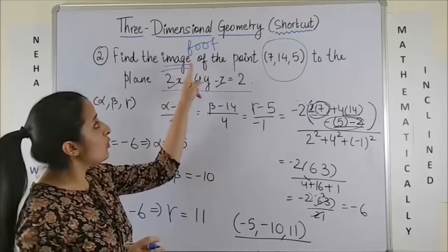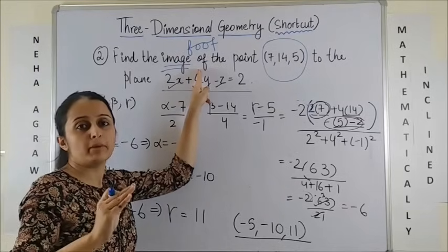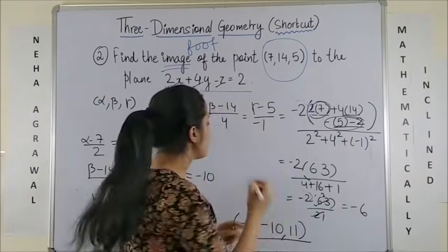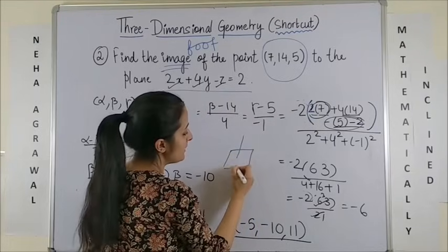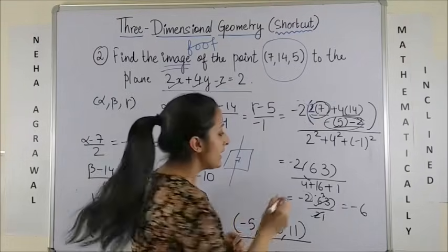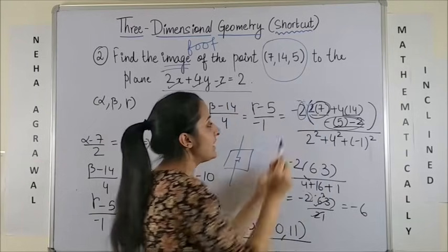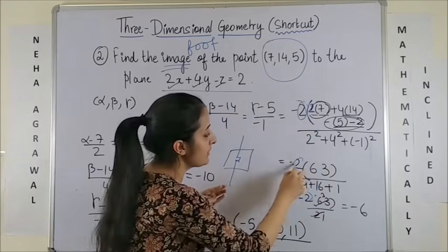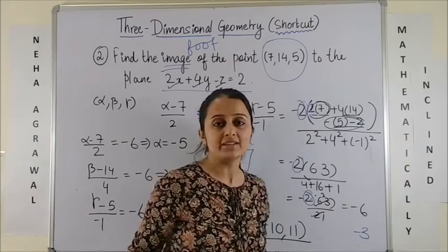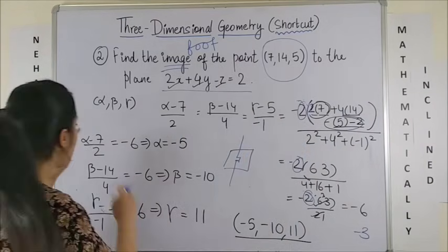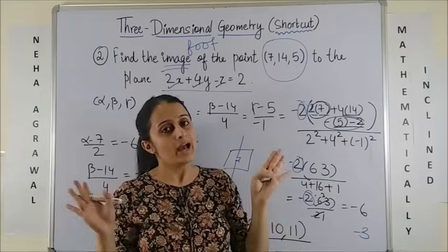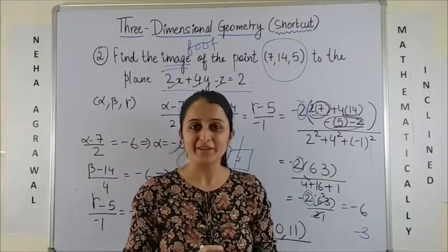Please note: if you have been asked to get the foot of the perpendicular instead of the image, the foot of the perpendicular is just halfway through. So instead of your 2, just use minus of the same thing — you don't need the 2. That means this should be equal to minus 3. You would then equate everything one by one to get the foot of the perpendicular.